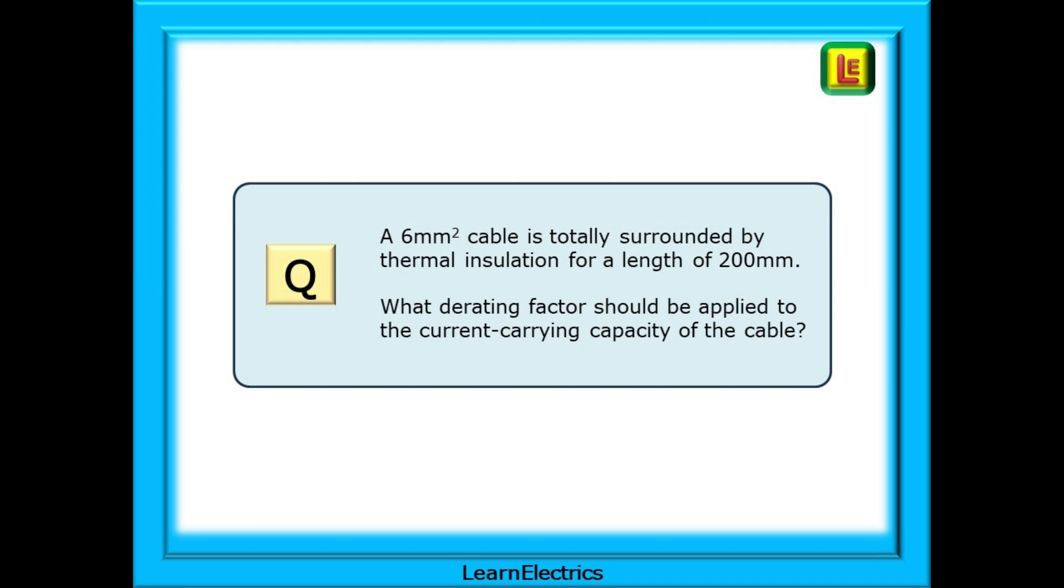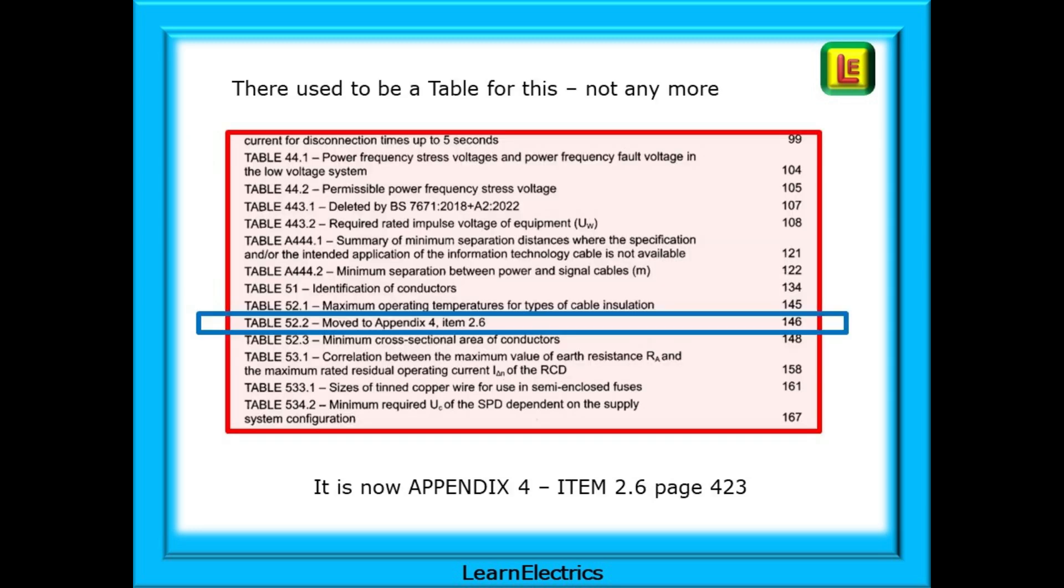A frequent exam question and something that often comes up on site is this: A 6 square millimetre cable is totally surrounded by thermal insulation for a length of 200 millimetres. What derating factor should be applied to the current carrying capacity of the cable? There used to be a table for this but not anymore. Table 52.2 has an entry near the middle of page 573. The book tells us that this has now been moved to appendix 4 as item 2.6 and it is no longer found on page 146. But we will find the table in appendix 4 on page 4.2.3. Let's go there now.